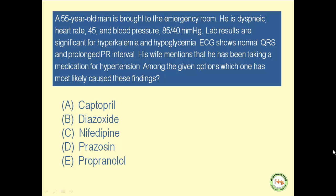How about prazosin? Prazosin is an alpha-1 blocker. It relaxes vessels, and it is commonly used in the management of essential hypertension. But it cannot be the correct answer, because it does not cause bronchospasm or bradycardia. Actually, reflex tachycardia is one of the side effects of prazosin.